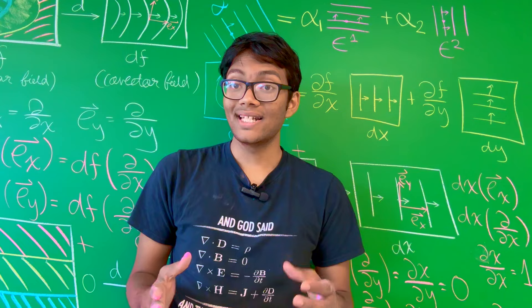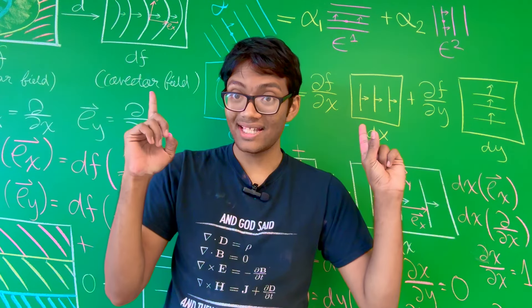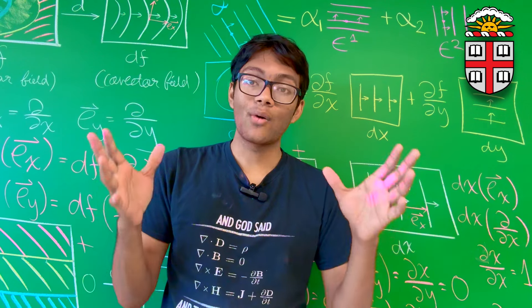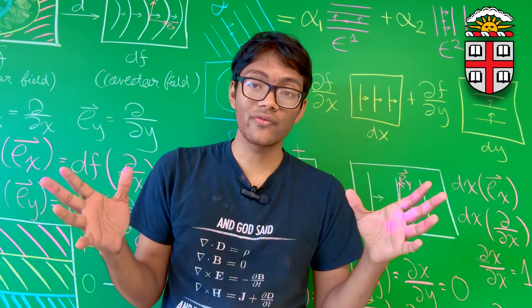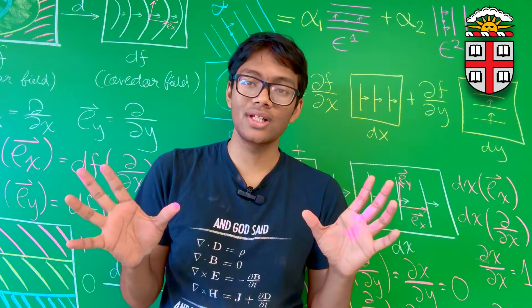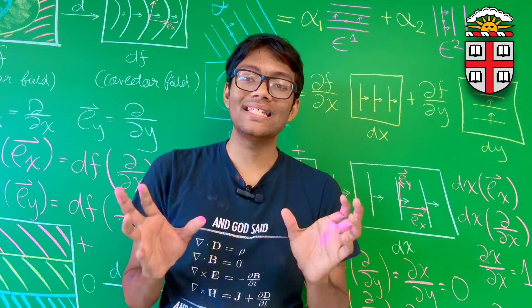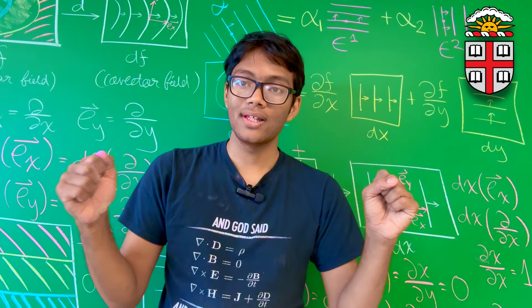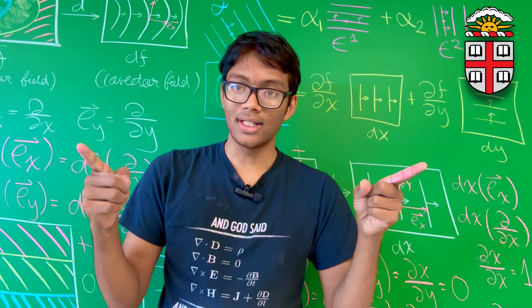Welcome to the next episode of General Relativity. I'm your host, Reefat Bari, graduate student at Brown University. Today, we're going to be showing you how any differential form df can be expressed as a linear combination of the basis dual vectors, dx and dy. Let's jump right in.